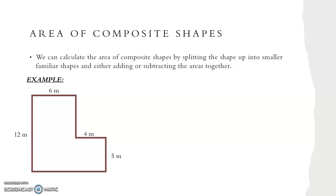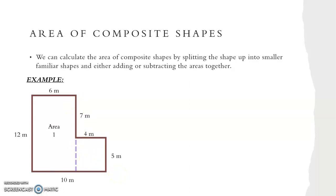We can also find the area of composite shapes by splitting the shape up into smaller familiar shapes and either adding or subtracting the areas together. For our example we have an L-shape, one of the most traditional composite shapes, and we want to find its area by splitting it into two different rectangles. We first need to find the missing lengths: the top total length is 6 plus 4 equals 10 metres, and the missing side length is 12 minus 5 equals 7 metres. Now that we know all of the dimensions we want to find area one and area two, then add them together to find the total area.